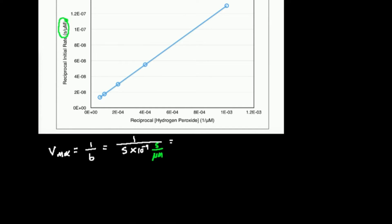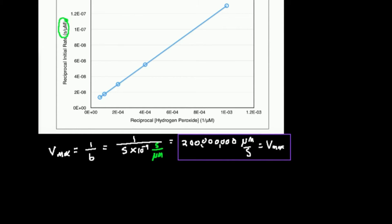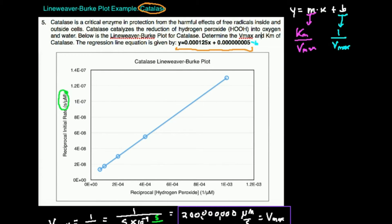When we divide 1 by 5 times 10 to the minus 9th, that's a big number. Counting the zeros: 1, 2, 3, 4, 5, 6, 7, 8 — so we get 200 million. The units are micromolar per second. That is our Vmax. To find the Vmax, just take the reciprocal of the y-intercept; the units are whatever the units of the y-axis are.